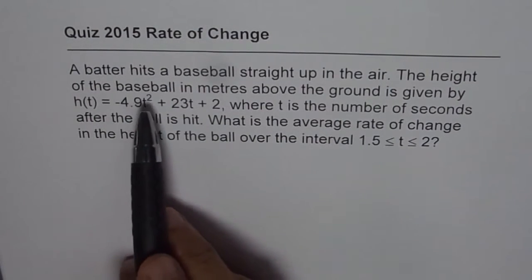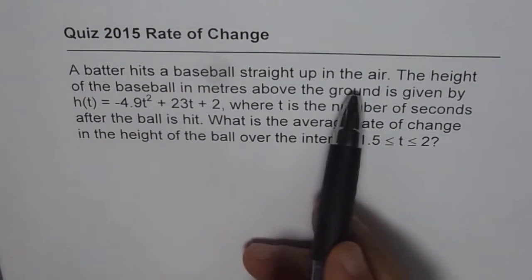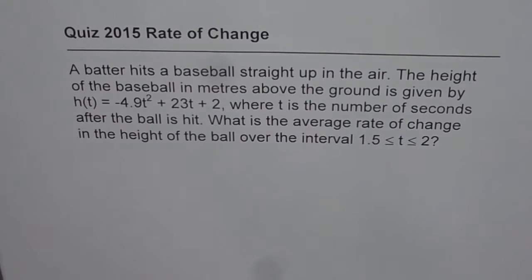A batter hits a baseball straight up in the air. The height of the baseball in meters above the ground is given by h(t) = -4.9t² + 23t + 2, where t is the number of seconds after the ball is hit. What is the average rate of change in height of the ball over the interval 1.5 to 2? So that is the interval.